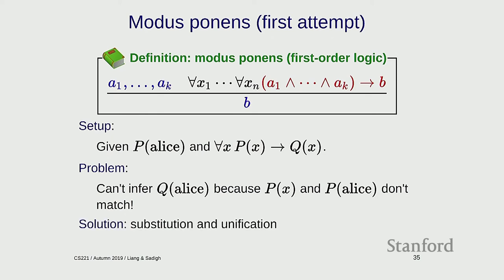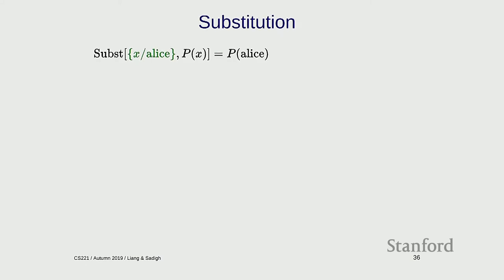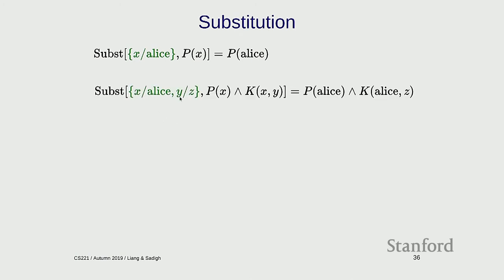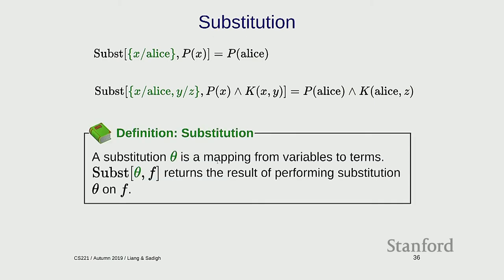The solution involves two ideas: substitution and unification. Substitution takes a formula and performs a find-and-replace to generate another formula. If I replace x with Alice in P(x), I get P(Alice). I can do multiple replacements — x with Alice and y with z simultaneously. In general, a substitution theta is a mapping from variables to terms, and theta(f) returns the formula with those variables replaced. If theta = {x → Alice}, then theta applied to P(x) gives P(Alice).